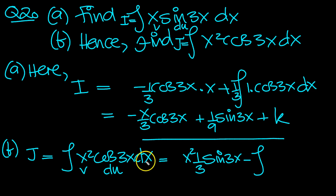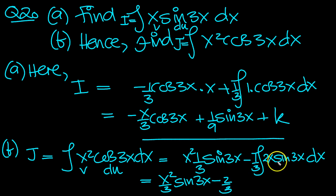minus the integral of u, which is sine 3x over 3, times the v, which is 2x dx, which equals x squared over 3 sine 3x, minus 2 thirds of integral of x sine 3x, which was i.